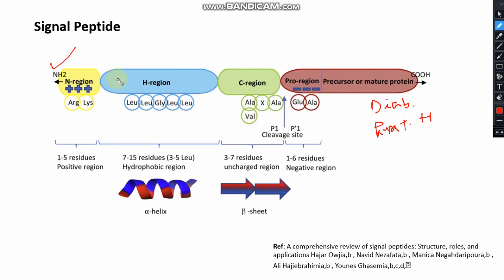Also in the laboratory, recombinant protein production depends on the signal peptide. The recombinant protein concentration and output very much depends on having an optimized and unique signal peptide. Otherwise, recombinant protein production is not possible.